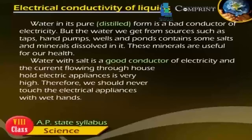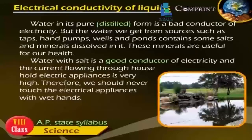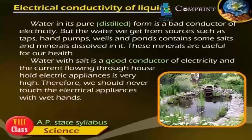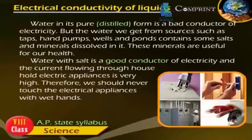Water in its pure form is a bad conductor of electricity. But the water we get from sources such as taps, hand pumps, wells and ponds contains some salt and minerals dissolved in it. These minerals are useful for our health. Water with salt is a good conductor of electricity, and since the current flowing through household electric appliances is very high, we should never touch electrical appliances with wet hands.